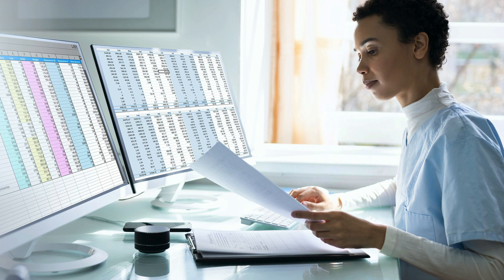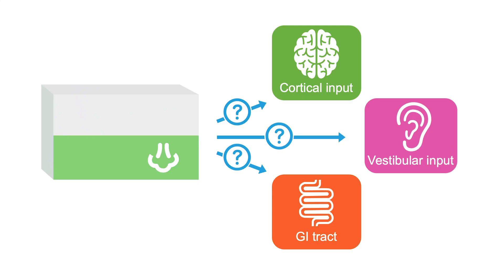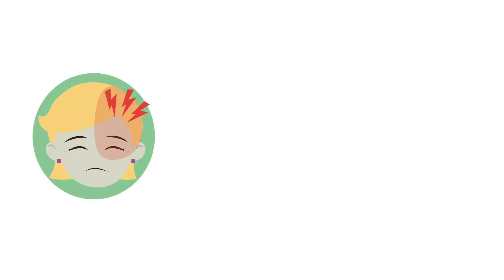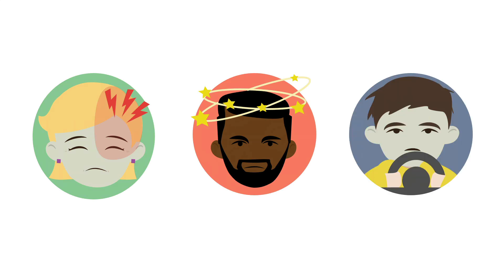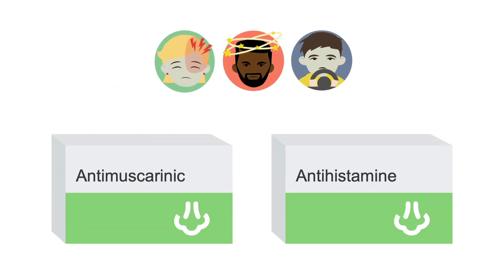There are few studies that compare common anti-emetics in specific disorders, so often the best approach is to choose a medication that targets the pathway you think might be most active. For labyrinthine disorders like migraines, Meniere's disease, or motion sickness, anti-muscarinic or antihistamine agents tend to be the best.